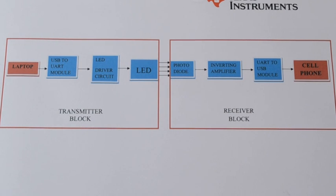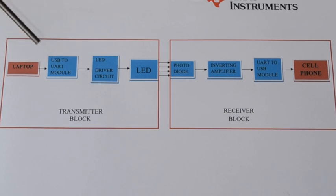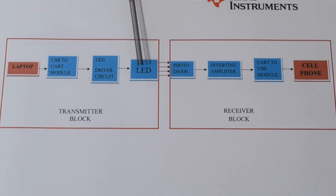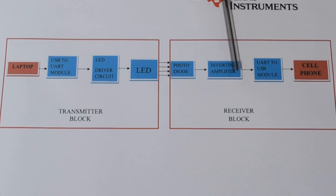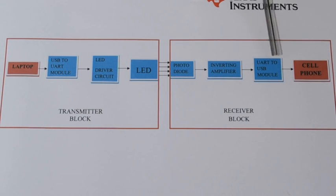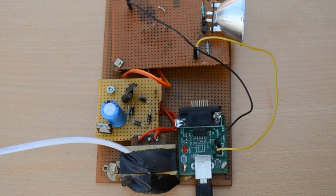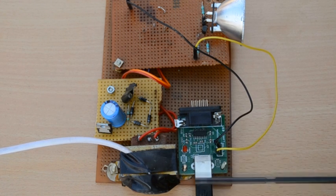This is our first proposed model. Here, information is fed from the laptop and the same is received by a cell phone. In the transmitter block, the information from the USB port of the laptop is fed to the LED by using two intermediate modules — namely, a UART to USB module.